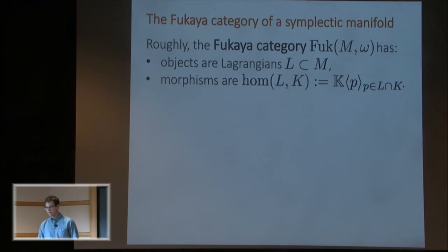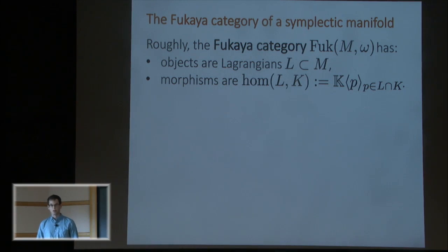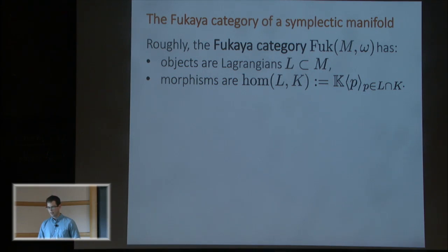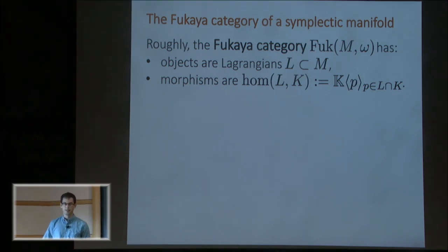There's an important invariant of a symplectic manifold called the Fukaya category. Roughly, this tracks the Lagrangians inside our symplectic manifold M and an intersection theory of those Lagrangians enhanced by some pseudoholomorphic curve information. More specifically, this is an A-infinity category. The objects are Lagrangians, and for any Lagrangians L and K, the morphisms are formal sums of intersection points, as long as L and K intersect transversely.